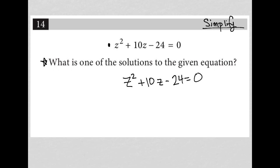So I'm looking for what are the two factors of negative 24 that when added together will equal positive 10. Two factors of negative 24, which when added together equal positive 10. So those two numbers would be positive 12 and negative 2.